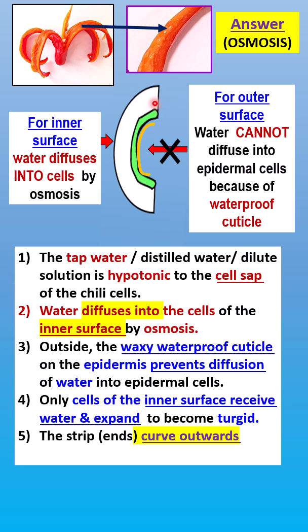The inner surface cells lengthen and become turgid. However, for the outer surface, which is shiny, the epidermal cells are covered by a waxy waterproof cuticle — represented here by the yellow line. Water cannot diffuse into the epidermal cells (the green layer) because of the waxy waterproof cuticle that prevents water from entering. Thus, the epidermal layer doesn't expand in size because it doesn't receive any water.